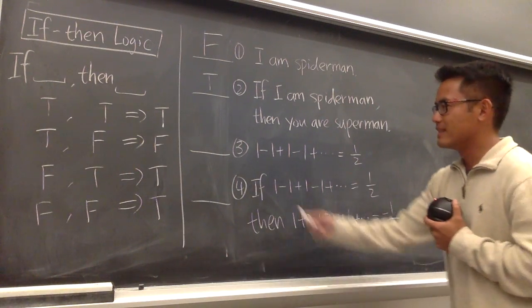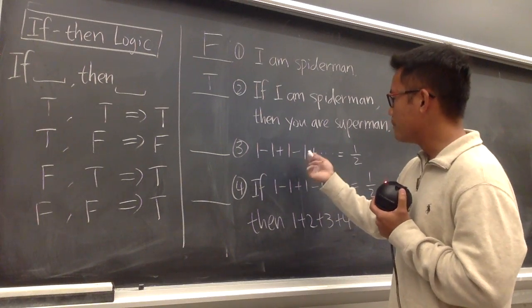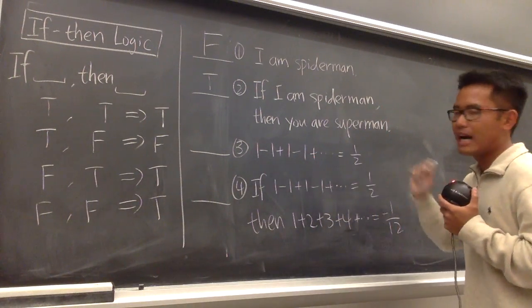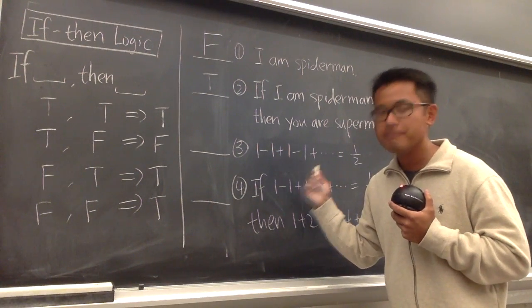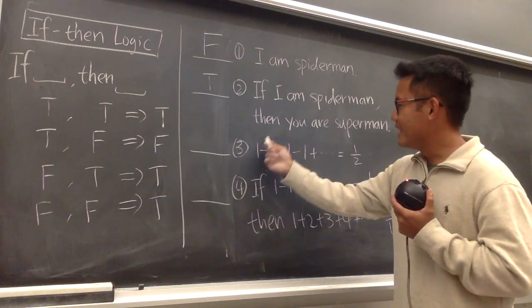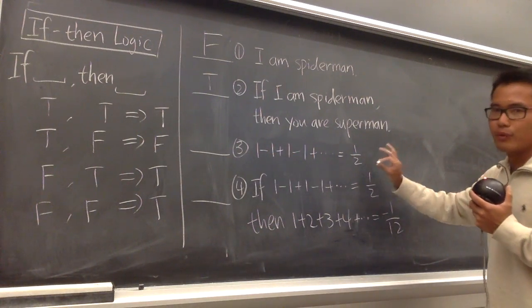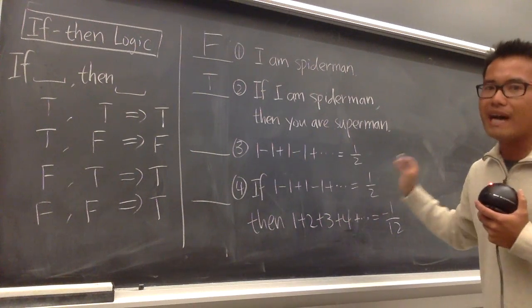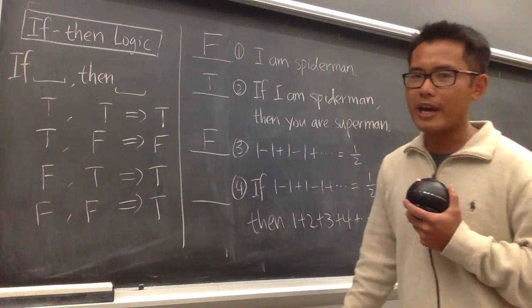All right, next, number 3. 1 minus 1 plus 1 minus 1 plus dot dot dot. This is equal to 1 half. This series, in fact, diverges. This, we cannot conclude any value for it, all right? If you say this is equal to 1 half, this right here is actually false, okay?